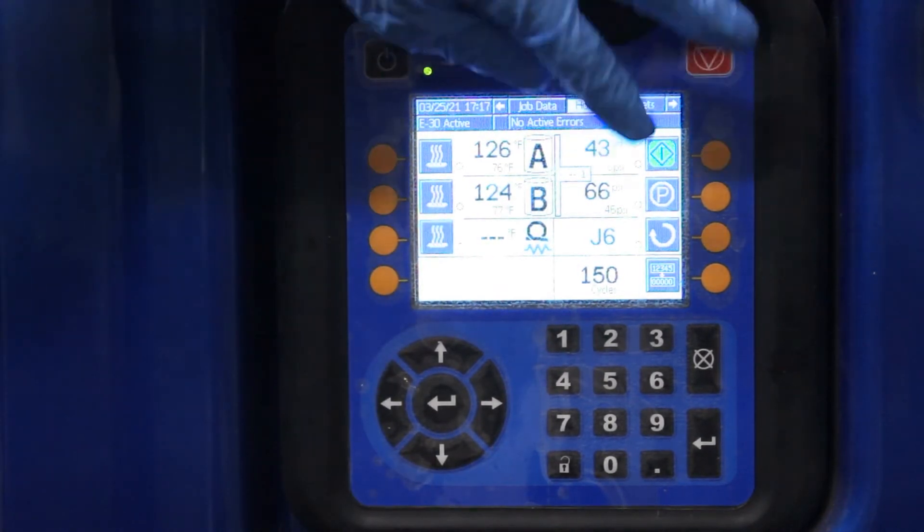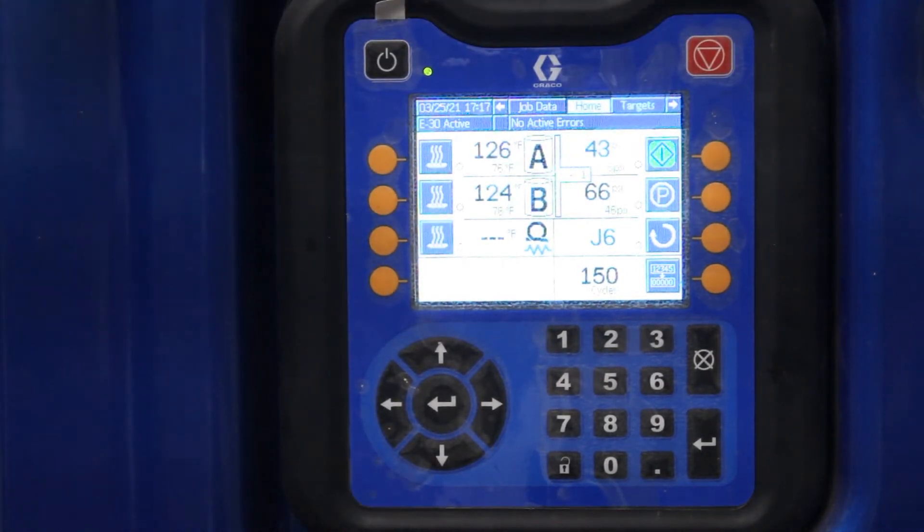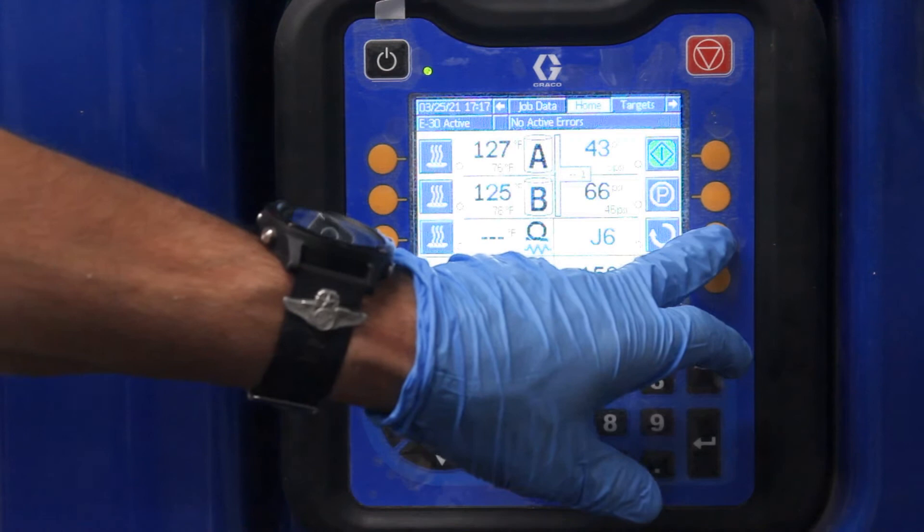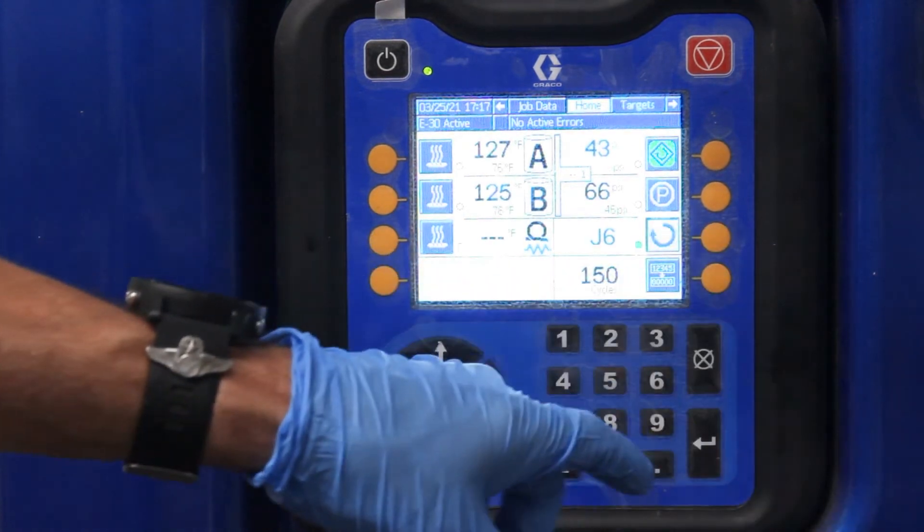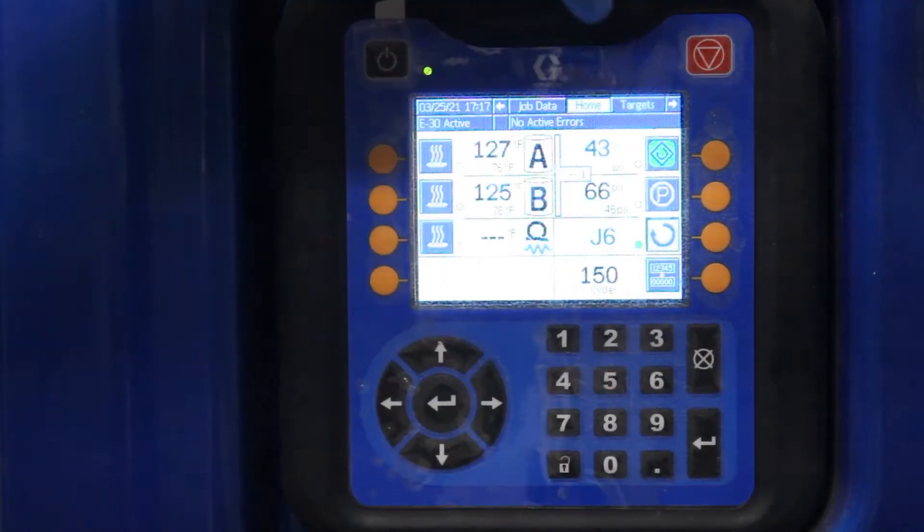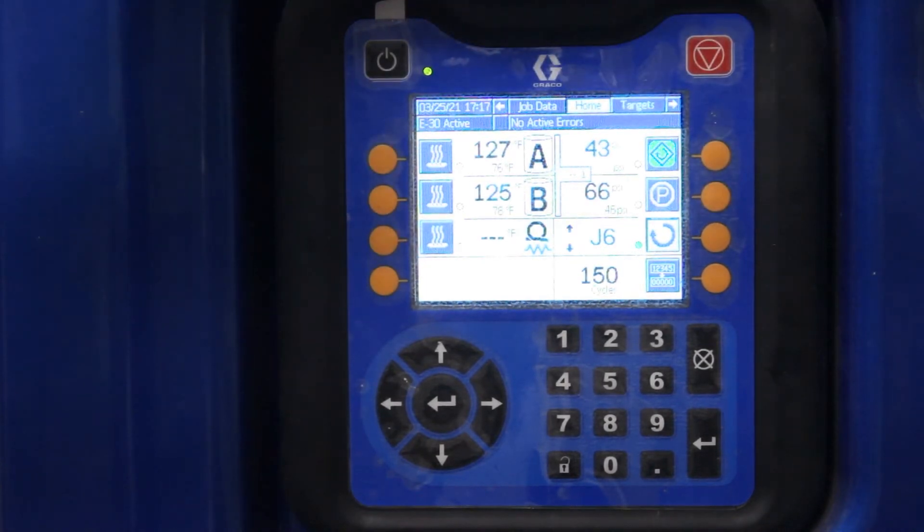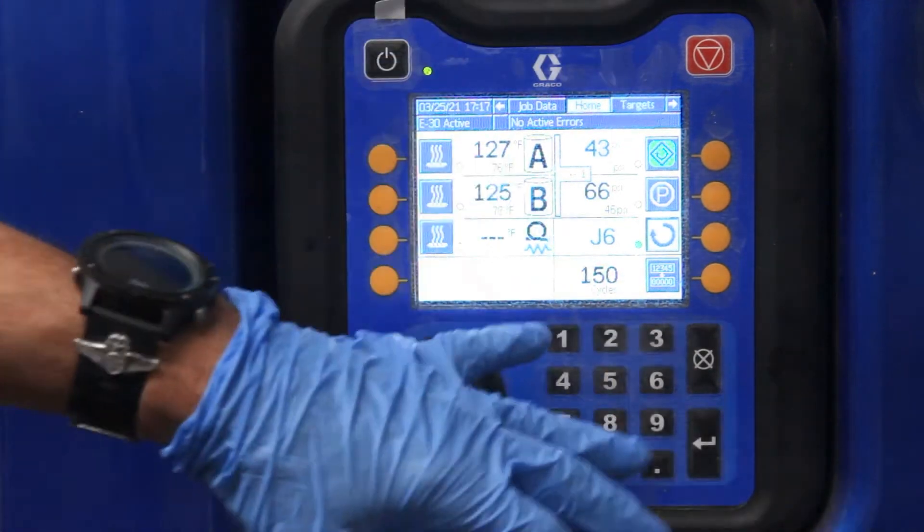Over here is your pressures that it takes for the machine to push through. A lot of guys ask what the jog feature is. If I go over here and highlight this, it changes from blue to gray. If I push the green button, it's going to start pumping. That helps in recirculating material faster. This goes up to 20.